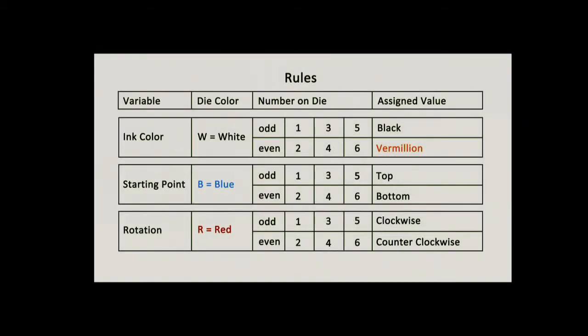I made this sheet to illustrate the formula that I use. First, I arbitrarily choose three colors of dice. The white die will control the color of ink I will use — if I roll an odd number, I will use black ink; if I roll an even number, I will use vermilion ink. The blue die will control the starting point of my enso — if it's an odd number, I will start from the top; if it's an even number, I will start from the bottom.